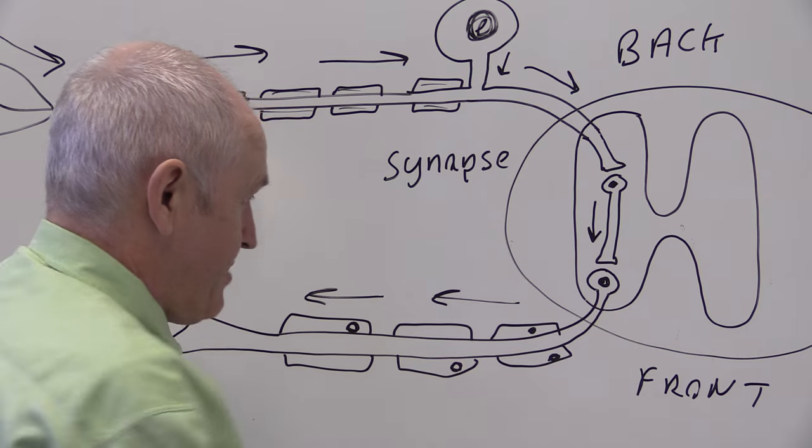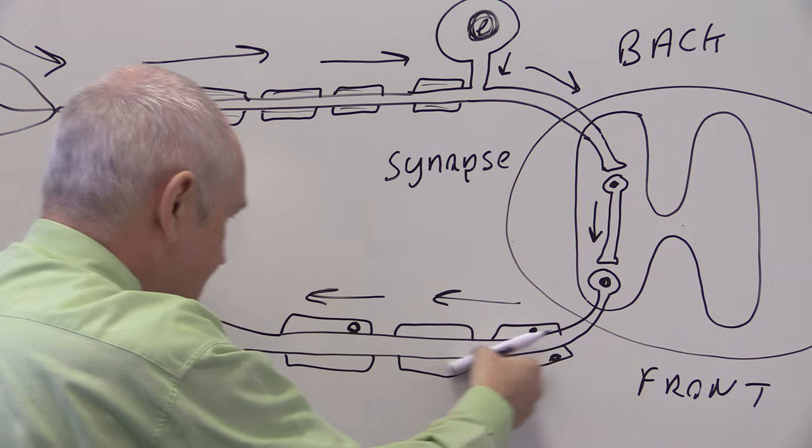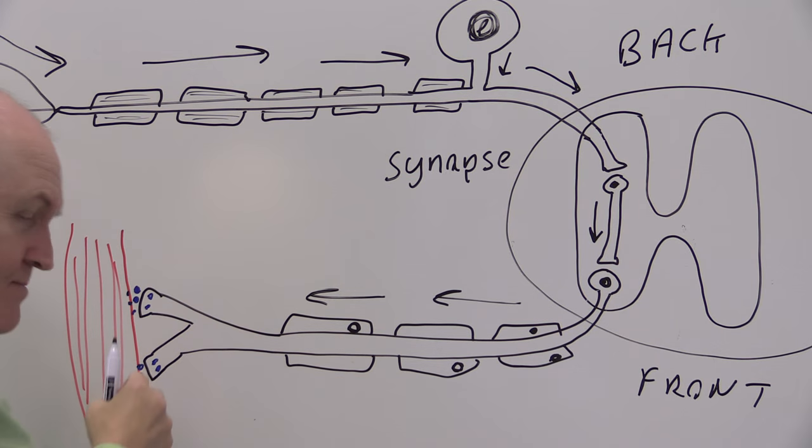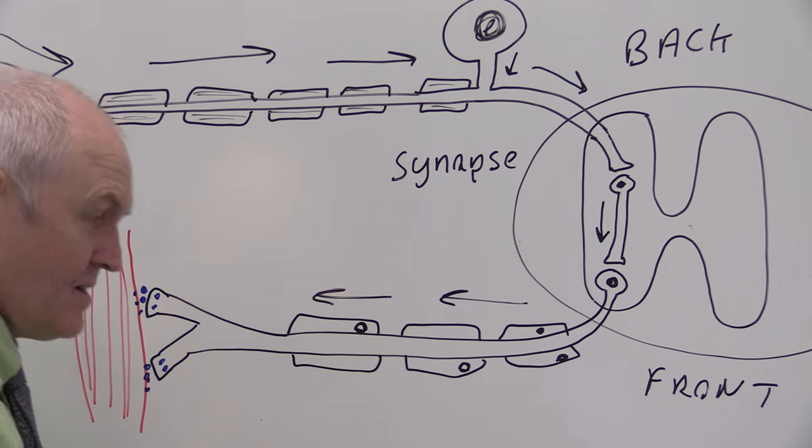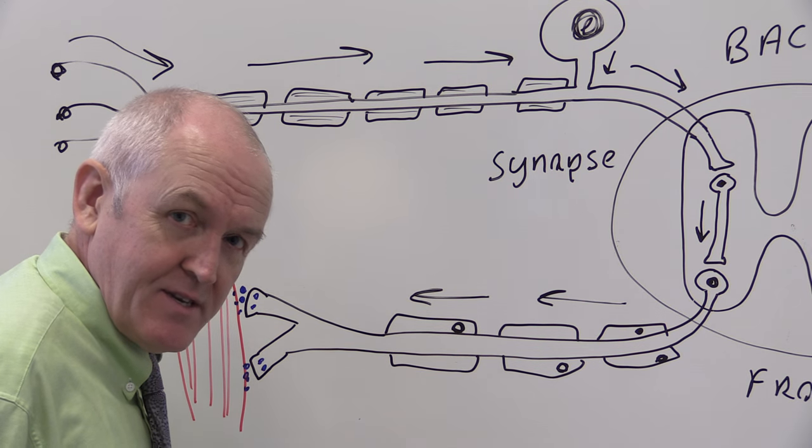New nerve impulse generated in the appropriate motor neuron, taking the impulse out sometimes to contract a muscle, other times to relax a muscle to allow the movement that that muscle contraction facilitates.